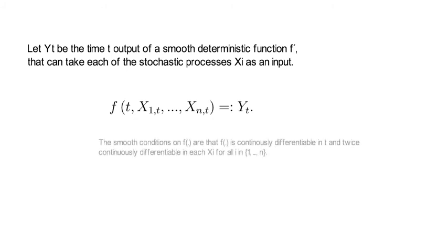The smoothness conditions on f are that f is continuously differentiable in t and twice continuously differentiable in xi for all stochastic processes i.